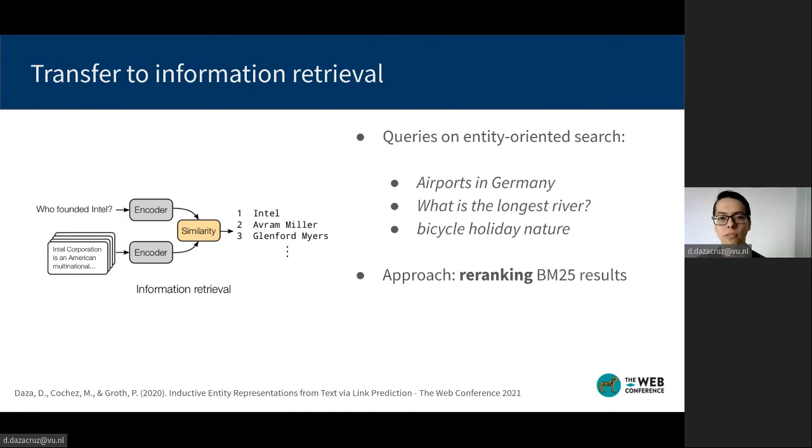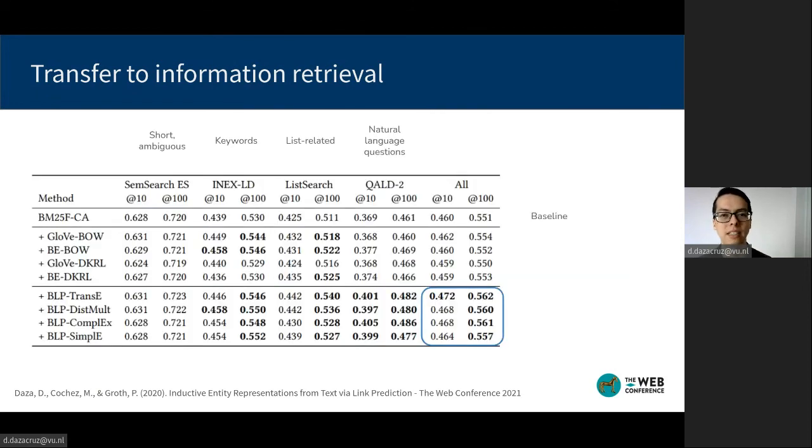They can go from well-formed questions like what is the longest river, to keyword queries like bicycle, holiday, nature. In this example, we show the NDCG results for the BM25 baseline, and the results when adding a particular encoder for re-ranking.